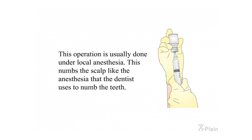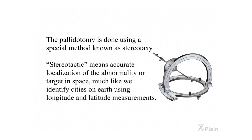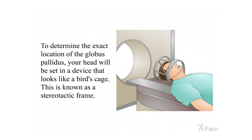Pallidotomy procedure. This operation is usually done under local anesthesia, which numbs the scalp like the anesthesia that a dentist uses to numb the teeth. The pallidotomy is done using a special method known as stereotaxy. Stereotactic means accurate localization of the abnormality or target in space, much like we identify cities on earth using longitude and latitude measurements. To determine the exact location of the globus pallidus, your head will be set in a device that looks like a bird's cage, known as a stereotactic frame.